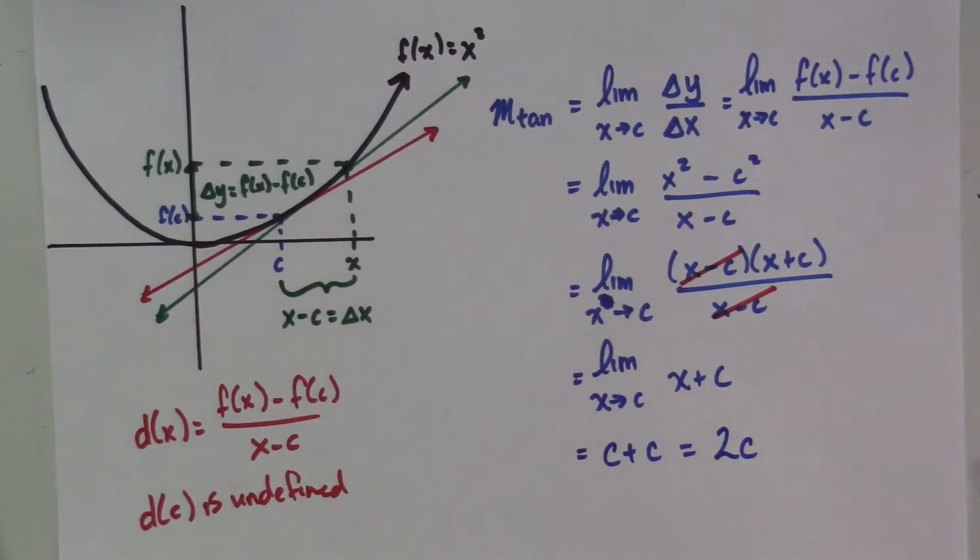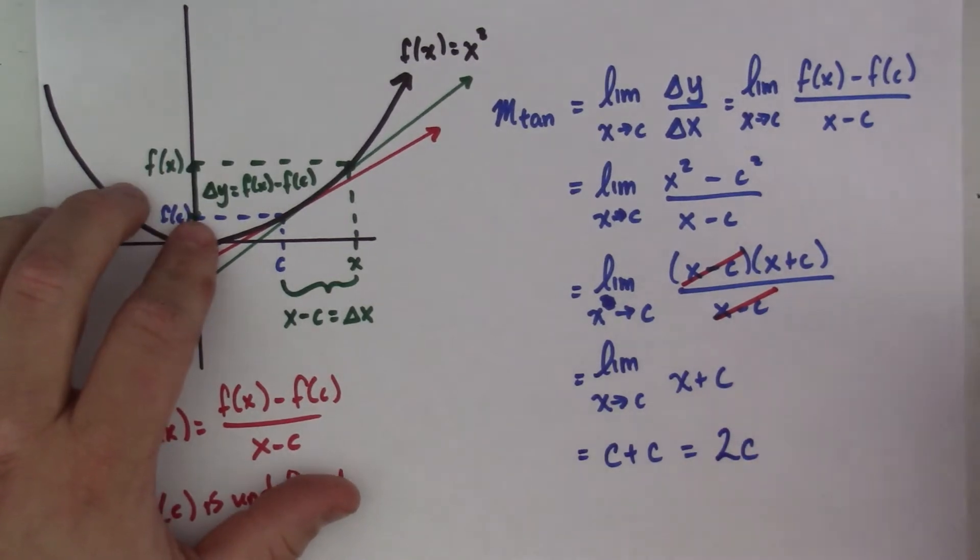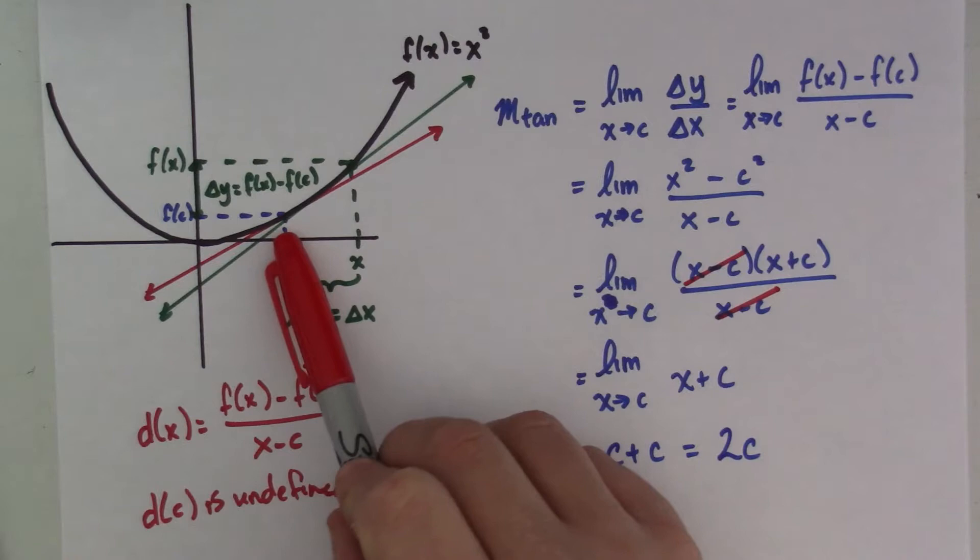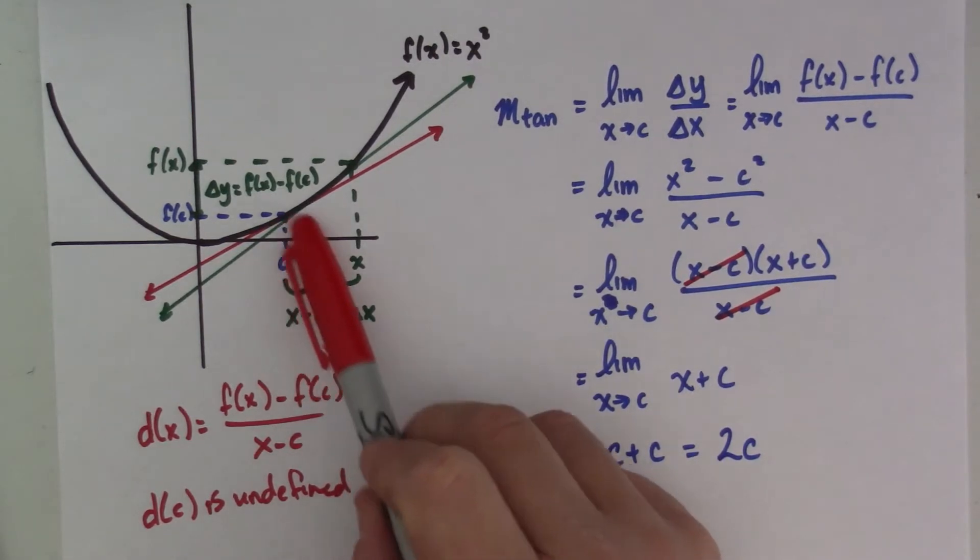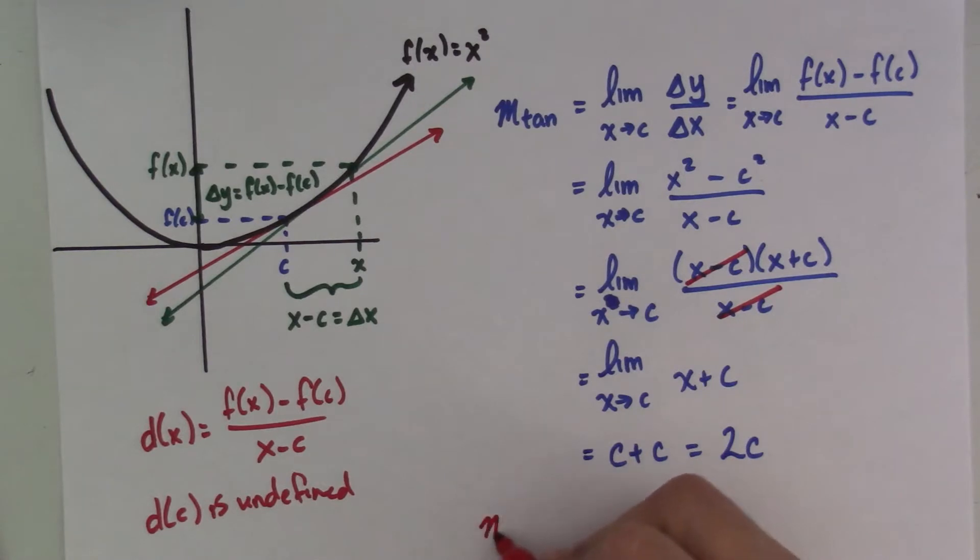So, for any value of f of x equals x squared, if I want to know the slope of the tangent line at that point, I just double that point. So, if c were 2, and I want to know what's the slope of the tangent line at x equals 2?